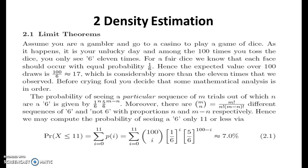Now the limit theorems. Assume you are gambling, and as it happens, it is your unlucky day and among the hundred times you toss the dice, you only see 6 eleven times. For a fair dice, we know that each face should occur with equal probability, that's 1 by 6. Hence the expected value over 100 draws is 100 by 6, which should approximately equal to 17, which is considerably more than the 11 times that we observed. So before carrying forward, you decide that some mathematical analysis has to happen. The probability of seeing a particular sequence of m trials, out of which n are 6 is given by 1 by 6 to the power n times 5 by 6 to the power m minus n.